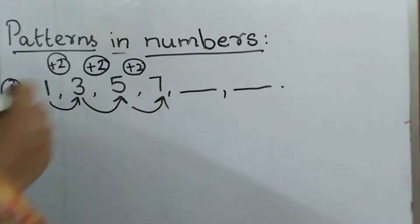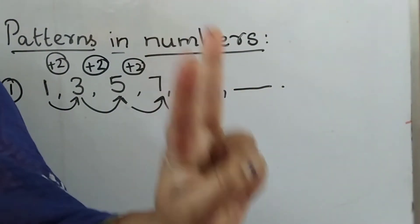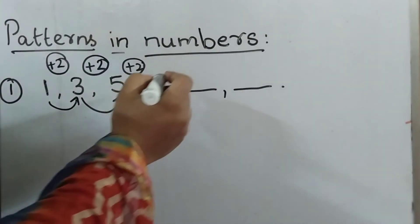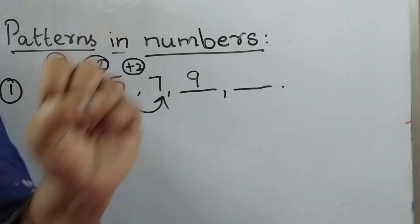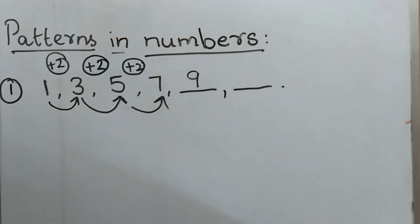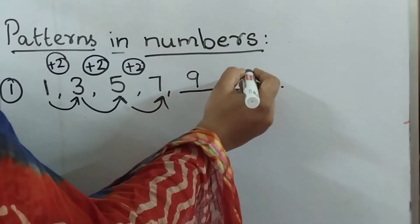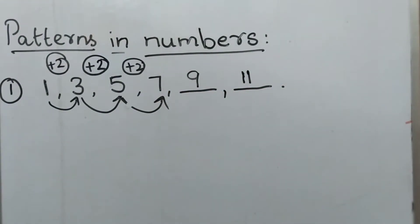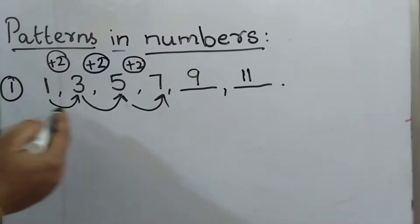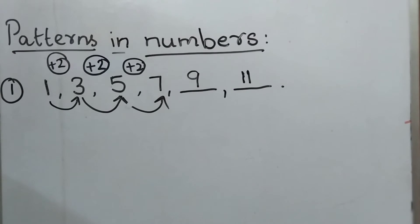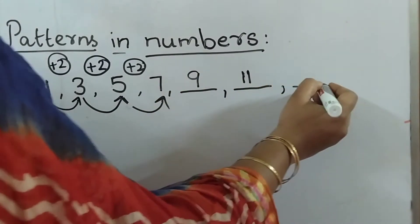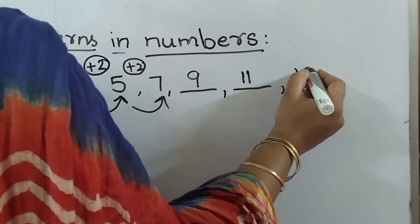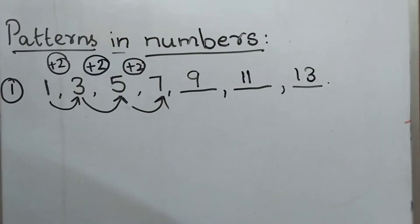What will be the next number after 7? Count 8, 9 — so 9. After 9, add 2 more: 10, 11. So the pattern here is addition of 2. Or we can say this is the pattern of odd numbers: 1, 3, 5, 7, 9, 11, 13.